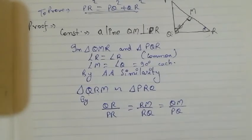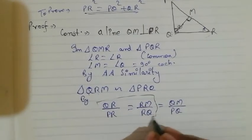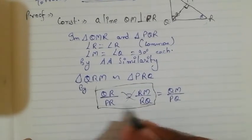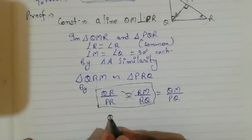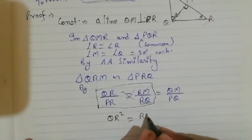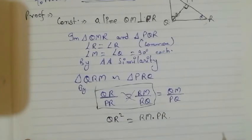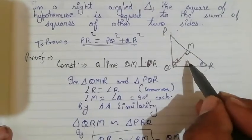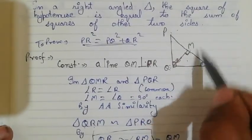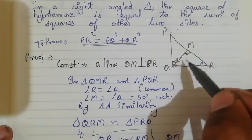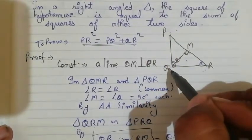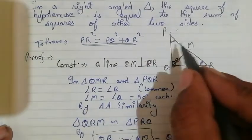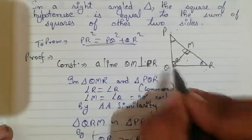Now we will take triangle PMQ. In this triangle, angle P is common and angle M equals 90 degrees. So angle P is common to both triangle PMQ and triangle PQR, and angle M equals angle Q, both being 90 degrees.